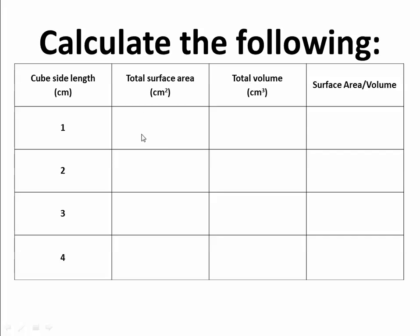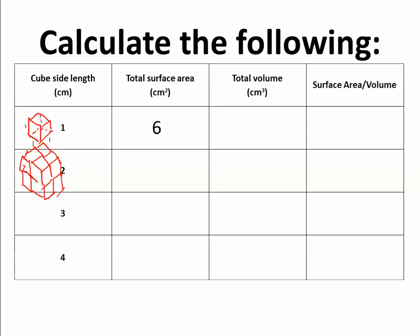For side length one: one times one equals one per face, times six sides equals total surface area of six. For side length two: two times two is four per face, times six is 24. For side length three: three times three is nine, times six is 54. For side length four: four times four is 16, times six sides equals 96 centimeters squared. That's the surface area for these cubes as they get bigger. The total volumes are: one cubed equals one, two cubed equals eight, three cubed equals 27, and four cubed equals 64.